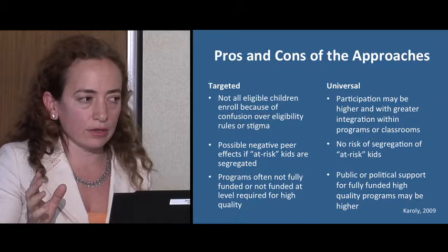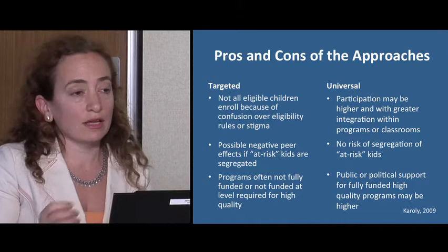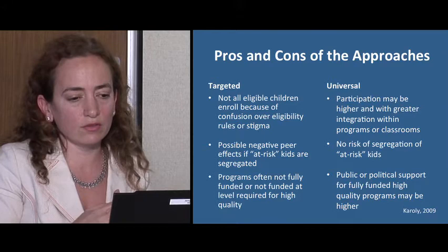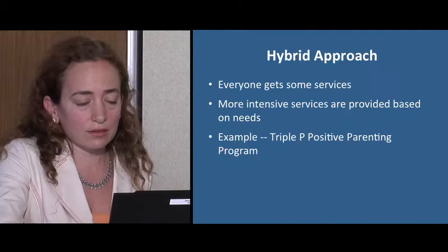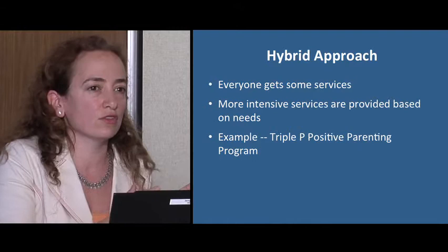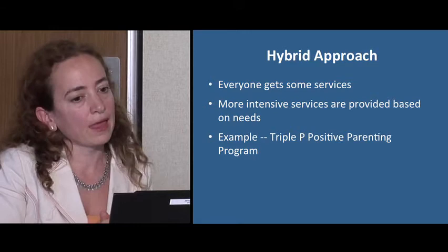The stigma issue is related to peer effects as well. If you only target services to at-risk kids, there are findings that having kids with higher risk factors grouped together is actually detrimental. There are also arguments about whether there's more or less political will to support universal versus targeted funding, affecting program quality. I think it's important to know what the evidence tells us, and then we can make decisions about whether to follow evidence or make choices based on moral, political, or other factors.